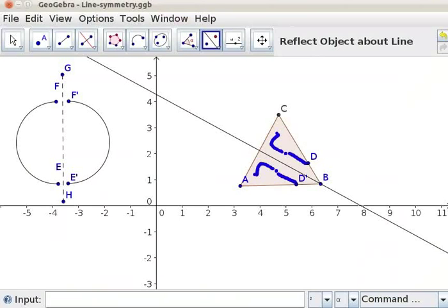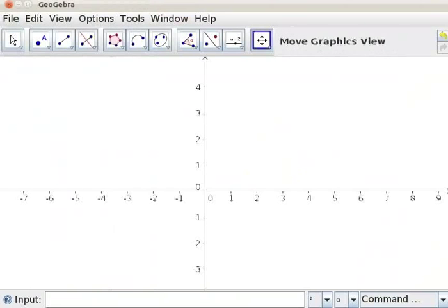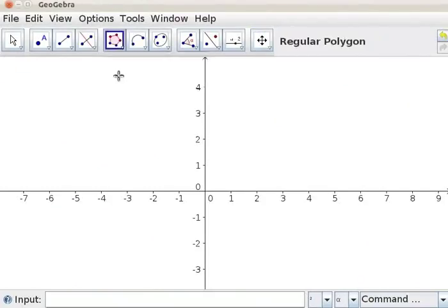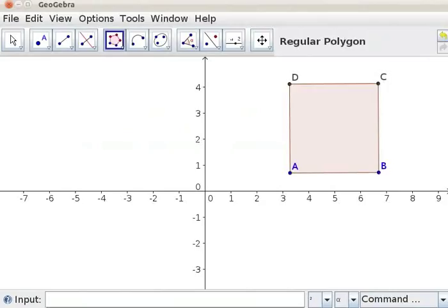Let us open New GeoGebra window. Click on File, New. Let us construct a square. Click on Regular Polygon tool from the toolbar. Click on the drawing pad, mark point A and B. A dialog box opens. Click on OK. A square ABCD is drawn.